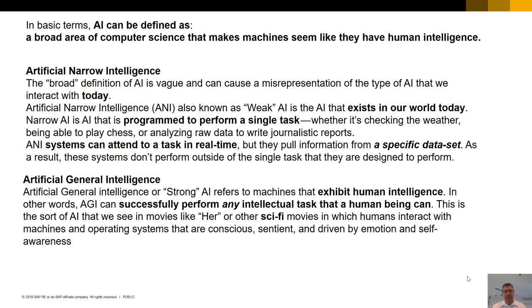AI is a broad area of computer science that makes machines seem like they have human-like intelligence. What we really have today and can interact with is known as artificial narrow intelligence or machine learning. That's really where we have a program designed to perform a specific single task. The system can do that task very, very well based on a specific data set and the decisions that it can make.